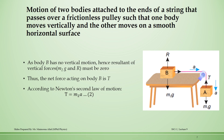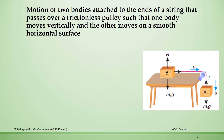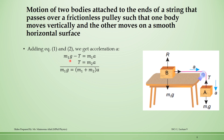Now we can use these two equations to find the acceleration. Equation 1: M1G − T = M1A. Equation 2: T = M2A. Adding both equations, the tension cancels out, and we get: M1G = (M1 + M2) × A. Dividing both sides by (M1 + M2), the acceleration is: A = (M1 / (M1 + M2)) × G.